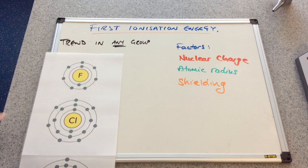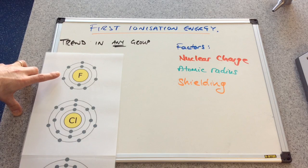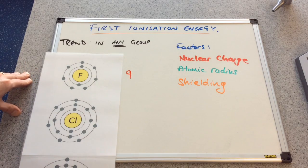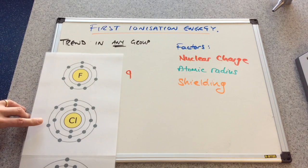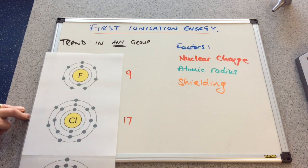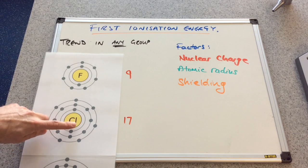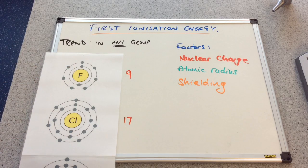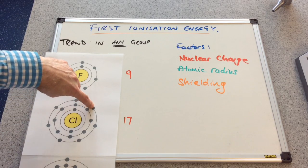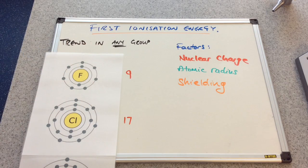So, nuclear charge: fluorine has 9 protons, chlorine has 17 protons. So chlorine has actually got a greater nuclear charge than fluorine. You might be thinking that means it should require more energy to get this outermost electron away from the attraction of the nucleus.